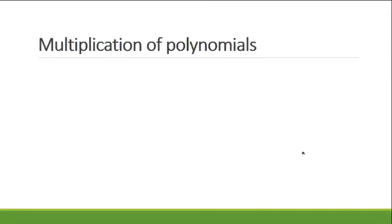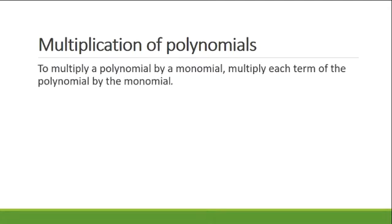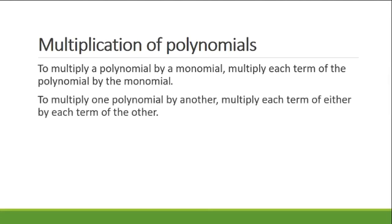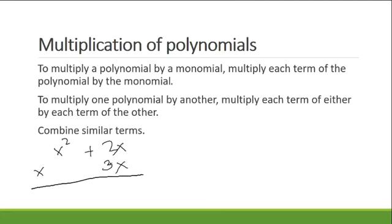Multiplication of polynomials. To multiply a polynomial by a monomial, multiply each term of the polynomial by the monomial. First example: x squared plus 2x multiplied by 3x. We're going to multiply this monomial to each term.